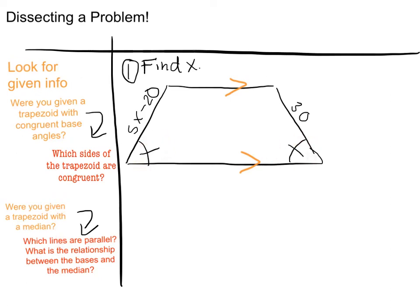So what can I conclude? That these two sides are also congruent. That means I can set up an equation where 5x minus 20 is equal to 30. If I add 20 to both sides I'll get 5x equals 50, divide by 5 on both sides and X is actually equal to 10.